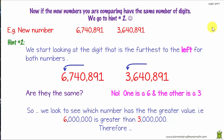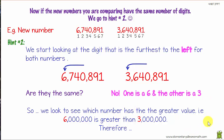Now if the numbers you are comparing have the same number of digits — seven and seven — we go to hint two. Hint two says we need to start looking at the digit that is furthest to the left for both numbers. In this case it's a six in one number and a three in the other. They are not the same, so we look to see which has greater value. Six million is greater than three million, so we use the greater than symbol.